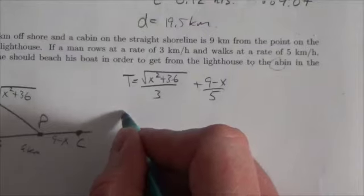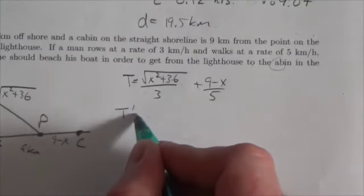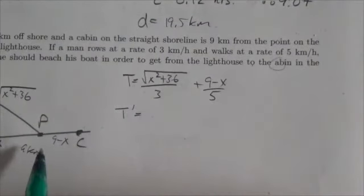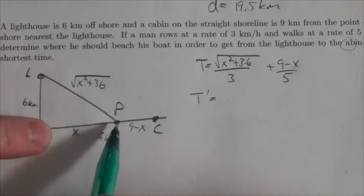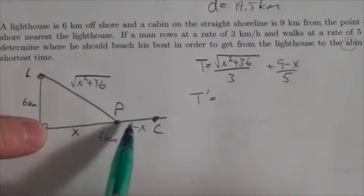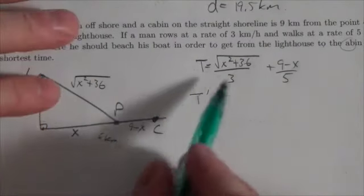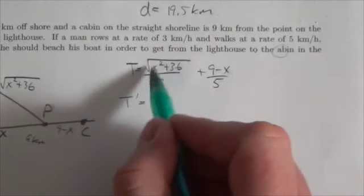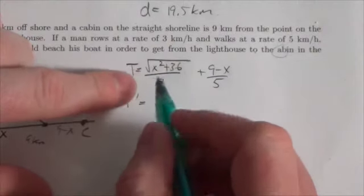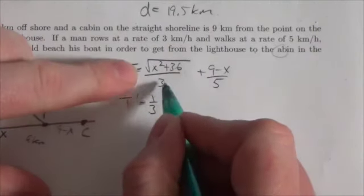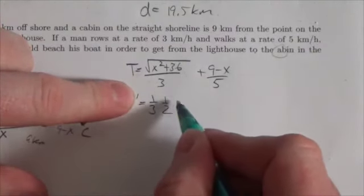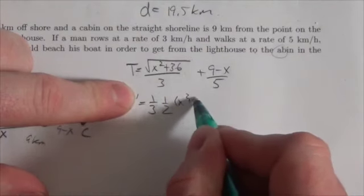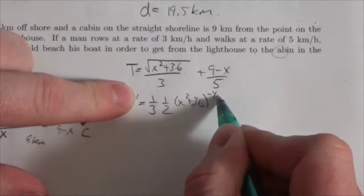So now we're gonna take the derivative of time with respect to x. As I change this position where he lands, we want to see how it affects the time here. And so what's gonna happen here is, with the square root, first of all I've got that one-third, and then I'm gonna get one-half, and this will be x squared plus 36 to the negative one-half, I'll multiply that by 2x.